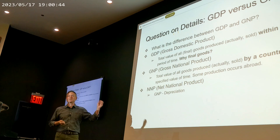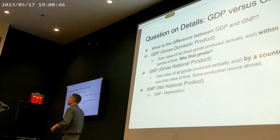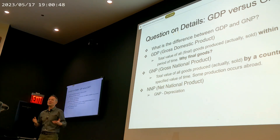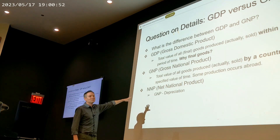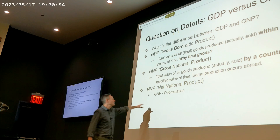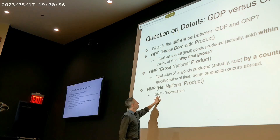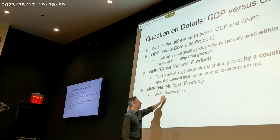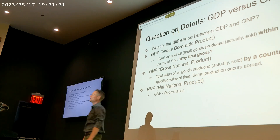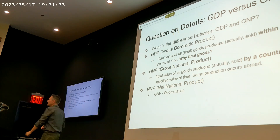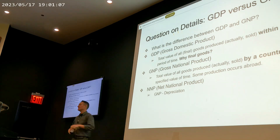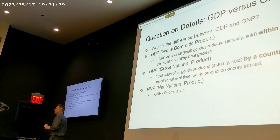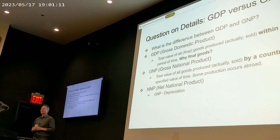Sometimes you'll also see net national product. What you do there is take your preferred measure of output and subtract out depreciation — getting a little into the weeds of accounting, but most of you probably have some notion of how depreciation works.